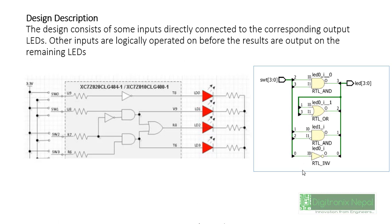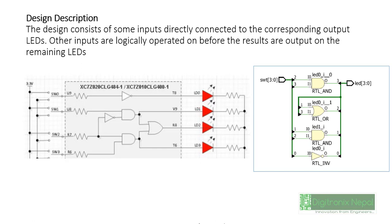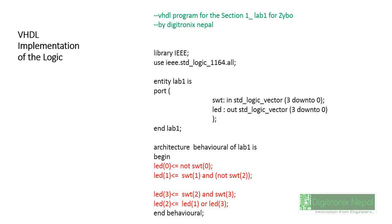Inside the Zybo chip, we have the core functionality. The RTL schematic of the functionality can be seen here. The main logic includes: NOT of switch zero assigned to LED zero; switch zero ORed into LED zero; switch one and switch two are logically ANDed and assigned to LED one; switch two and switch three are ANDed and assigned to LED three; and LED one OR LED three is computed and assigned to LED two.